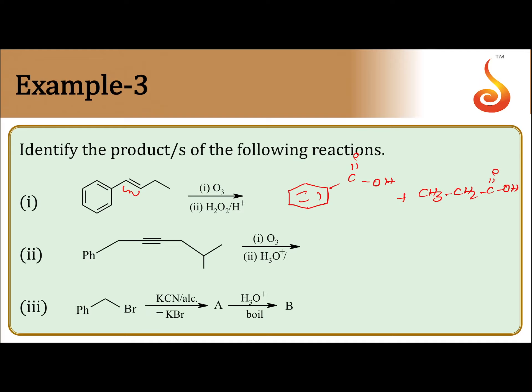Now let us see the second reaction. The reactant is an alkyne undergoing oxidative ozonolysis. The shortcut here: erase the triple bond and replace it with a carboxylic acid. So the products will be C₆H₅CH₂COOH plus CH₃CH₂COOH.